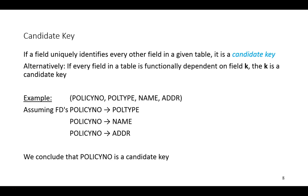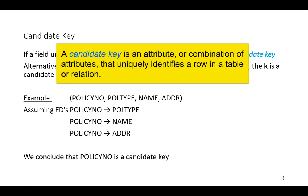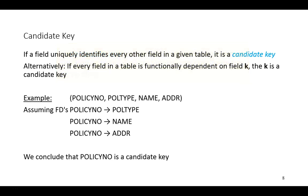It could serve to uniquely identify a row within the policy table. So a candidate key is an attribute or combination of attributes that uniquely identifies a row in a table or relation. Given its value, we can determine the values of all the other attributes.